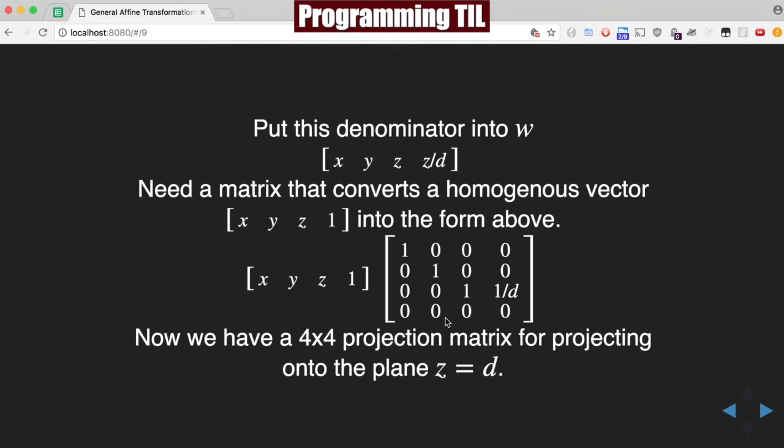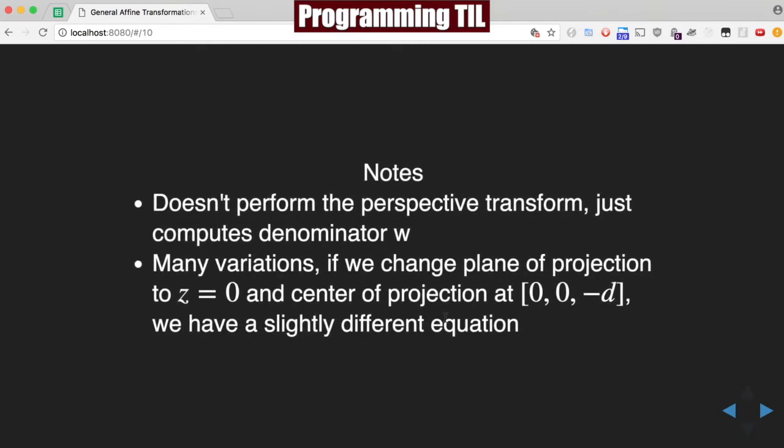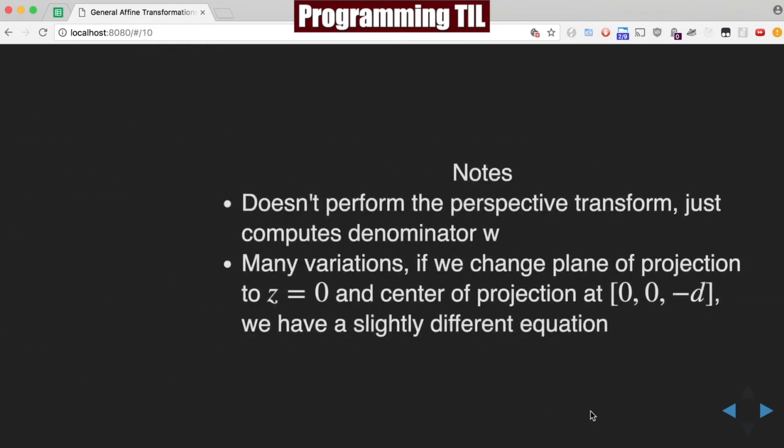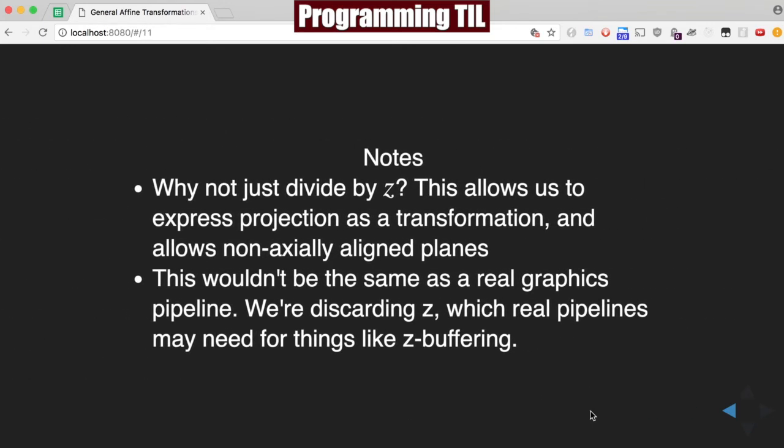Now, there's a few issues with this, but we'll just go over some notes real quick. So this doesn't actually perform that perspective transform. It just computes the denominator, W. In order to compute the transform, you still have to divide all of the variables by that W. There's different variations of this. We can change the plane of projection to z equals 0 and the center of projection at (0, 0, negative d). And it'll have a slightly different equation. So note that this is not the only equation that you need to use. Why not just divide by z? This allows us to express the projection as a transformation, so we can combine it with other transformations. And it allows us to use non-axially aligned planes, so it doesn't have to be on the axis.